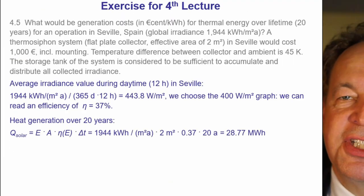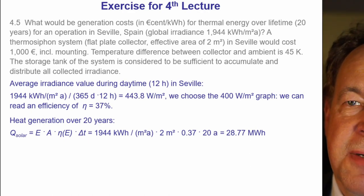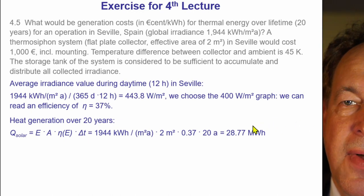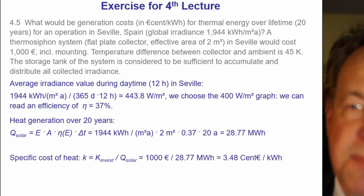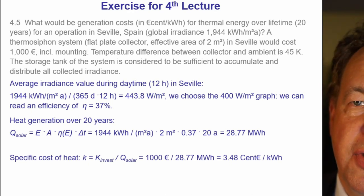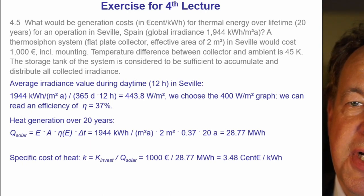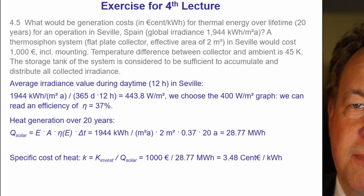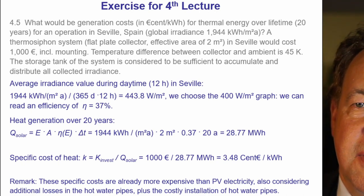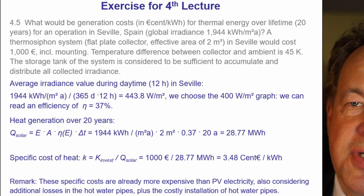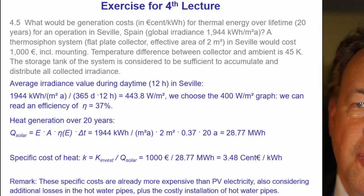Heat generation over 20 years using the average efficiency gives 28.77 MWh of heat production. The specific cost of heat is 1,000 EUR divided by 28.77 MWh, which equals 3.48 cents per kilowatt hour. In Spain, this is now comparable to the cost of photovoltaic electricity, so one should also consider the additional cost of installing hot water pipes versus electrical cables.